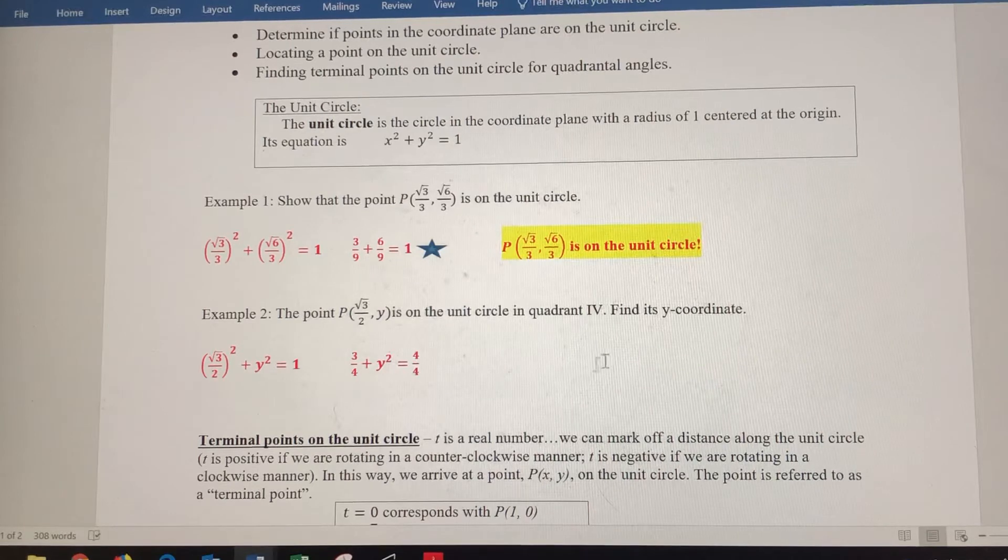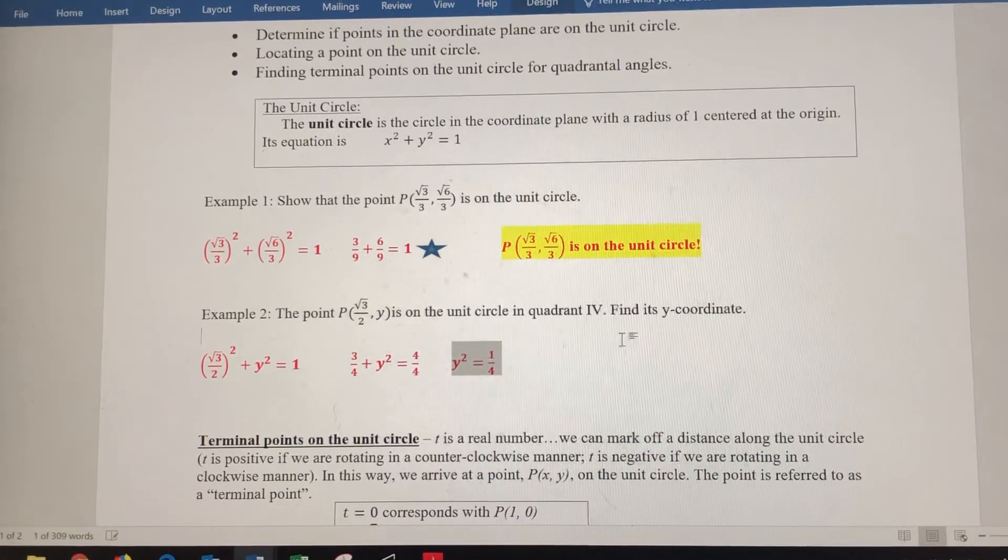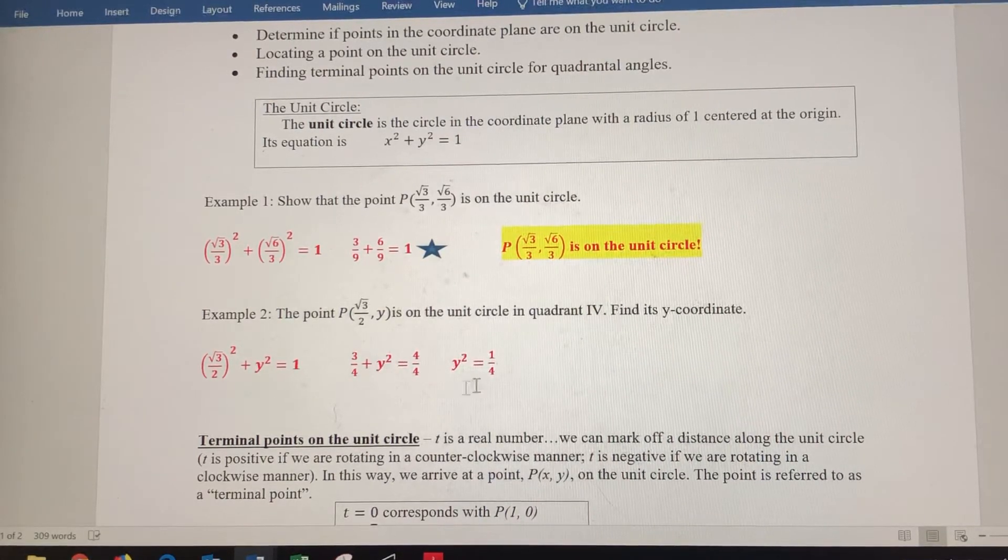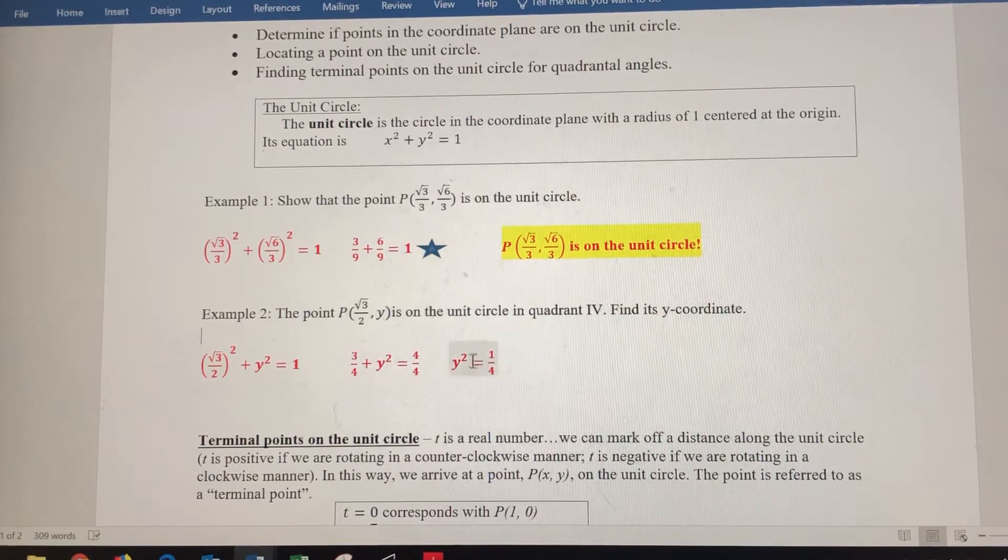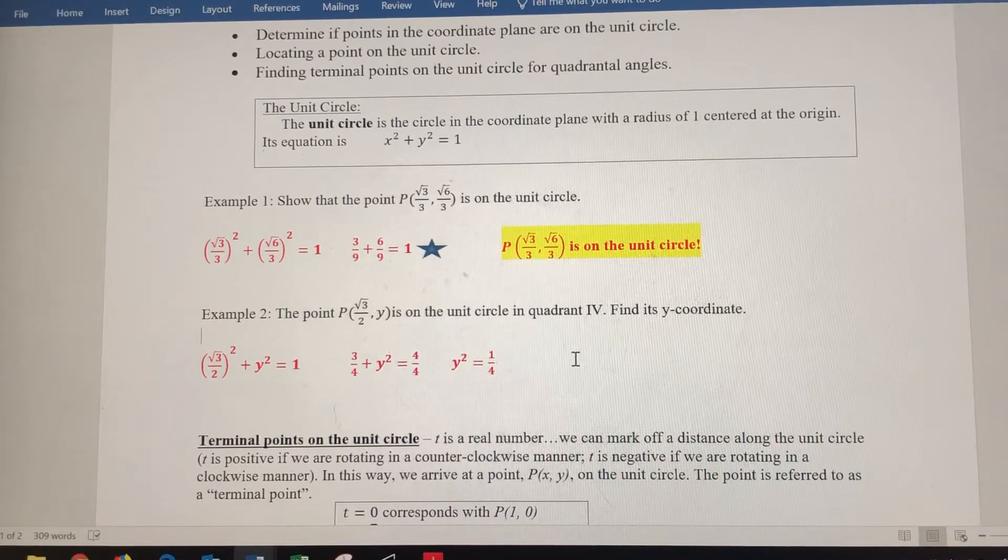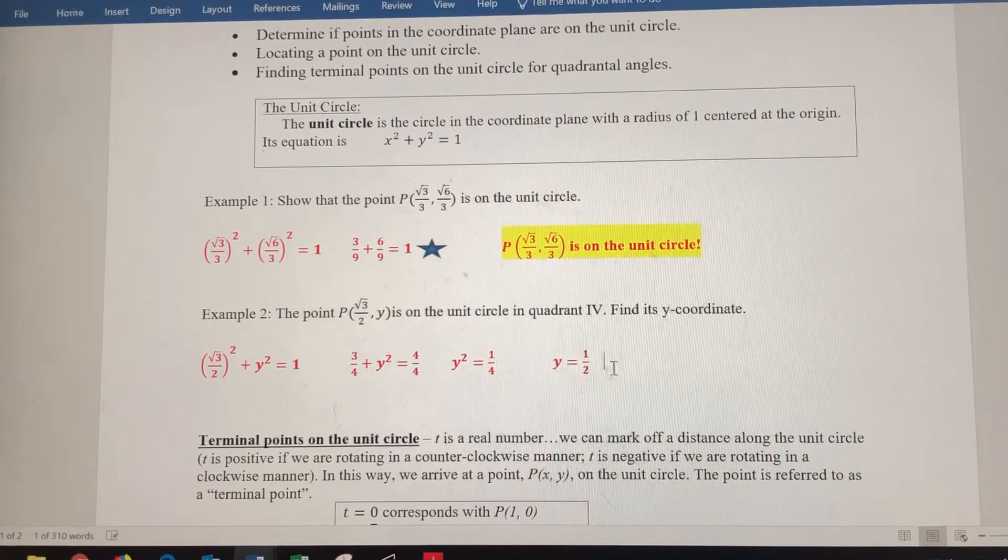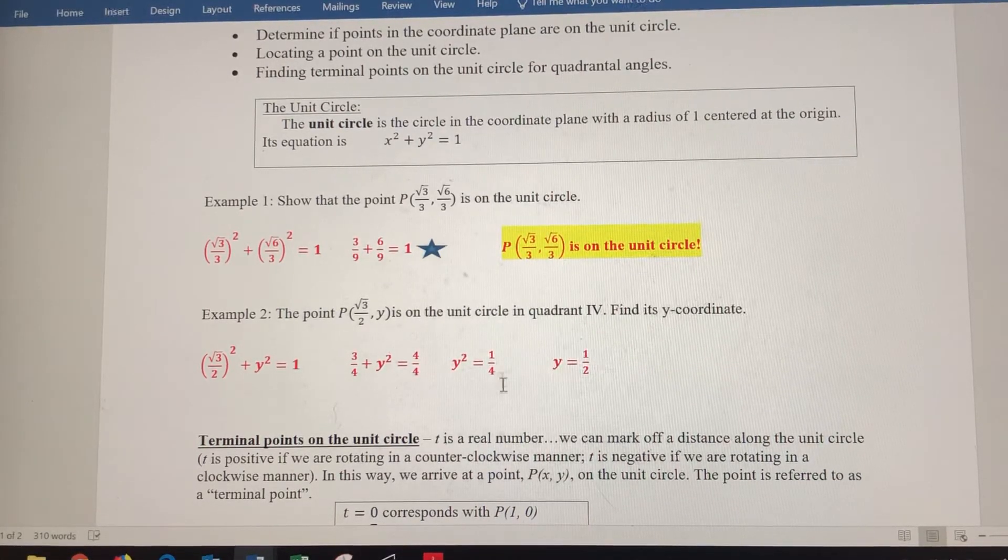So now I'm going to subtract 3-fourths from both sides. So I get y-squared on the left side equal to 1-fourth on the right side. Now I want to get y by itself, so I'm going to take the square root of both sides. So square root of 1 is 1, square root of 4 is 2.